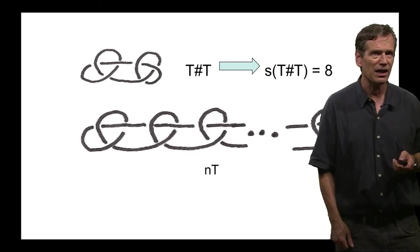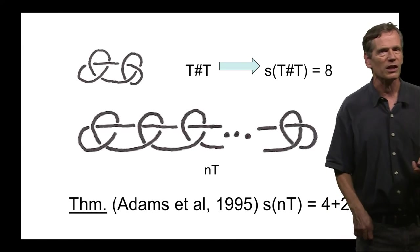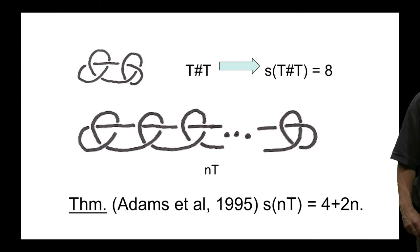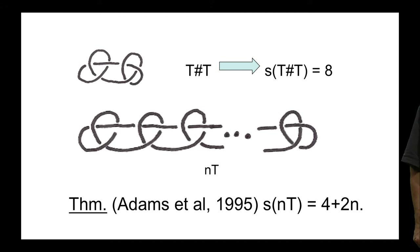And if you take a look at a composition of n trefoils, so I've glued n of these knots together. Well, each time you add another knot, it turns out you only have to add two sticks. And so ultimately, what students and I showed was that the stick number of a composition of n trefoils is exactly 4 plus 2n. That's the four from the first knot plus two more for the first knot plus two and an additional two sticks for every other knot as we go on.